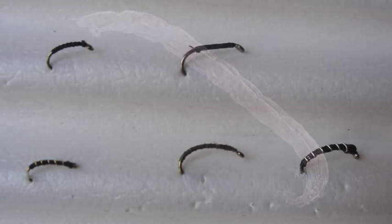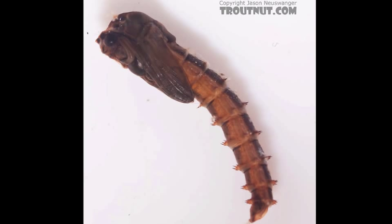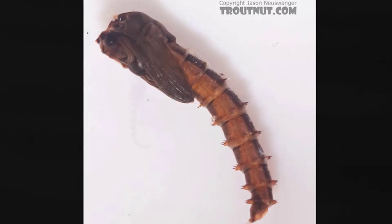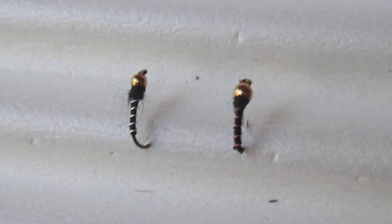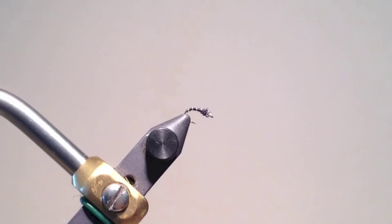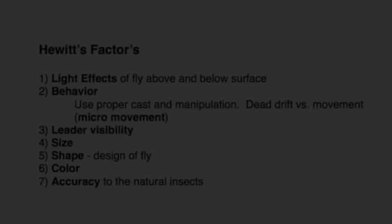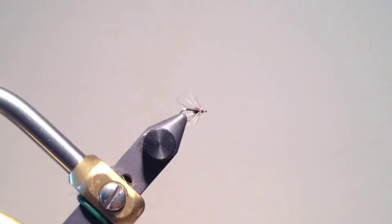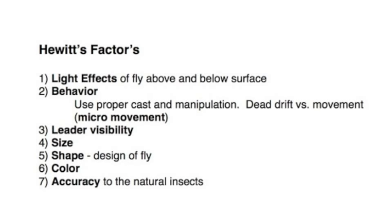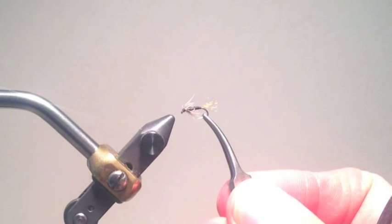We also looked at the midge pupae, which I felt was far more important than the larvae. We looked at beadhead pupae patterns to fish relatively deep, glass bead pupae patterns to fish in the mid-current, and pupae patterns to fish in the surface film. We even looked at a midge soft hackle that I use to fish as a stillborn midge. While we didn't directly discuss it, all of these patterns do fulfill Hewitt's factors quite well, with the possible exception of the soft hackle used for a stillborn midge. Most stillborn midges will still have an attached pupal skin, so I do occasionally tie a shuck on the soft hackle.